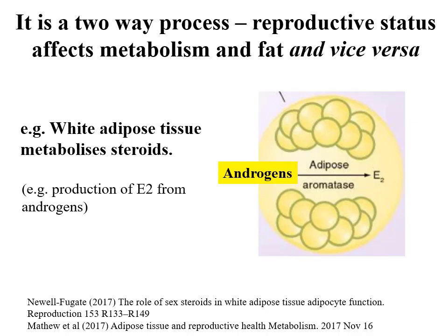It's important to remember that this is all a two-way process. Not only does reproductive status affect metabolism and fat distribution, but also metabolism and fat distribution affect reproductive status. One important pathway is that adipose tissue can metabolize steroids — androgens, for example, can be changed to oestrogens via fat tissue, because adipose tissue contains aromatase, which changes androgens into oestrogens.